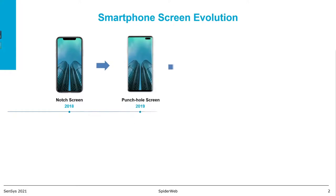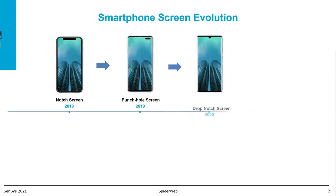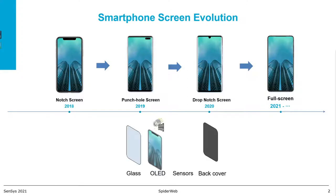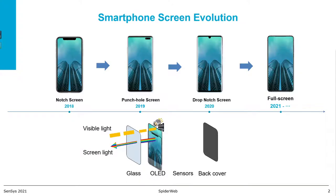Currently, smartphone screens use lateral bezel and low bezel to increase the screen-to-body ratio. The final goal is to achieve full screen. This trend will not give us space to place ambient light sensors and cameras on the screen, so they must be deployed under the screen.